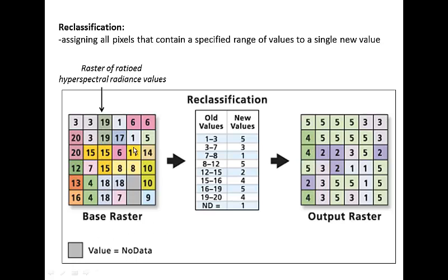In our example, this was a raster of ratioed hyperspectral radiance values, and this will be a raster of integers corresponding to a priority level for cleanup.